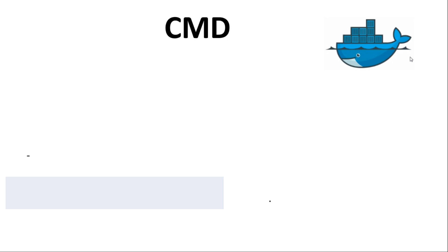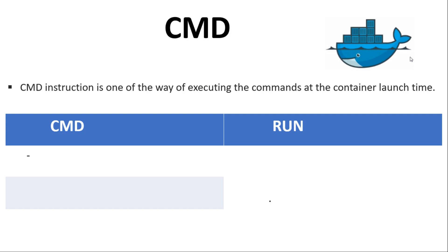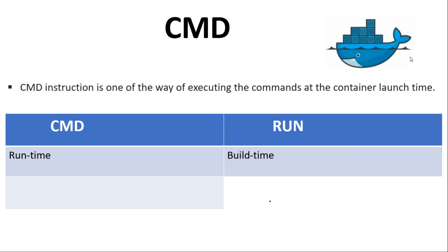We will also discuss how CMD instruction is different from the Dockerfile RUN instruction. CMD instruction is one of the ways of executing commands at container launch time — that is, the time at which the Docker container is started using the docker run command. CMD instruction looks very similar to RUN instruction as both are used to execute commands. But the major difference is that CMD executes commands at container run time, while RUN executes commands at image build time.